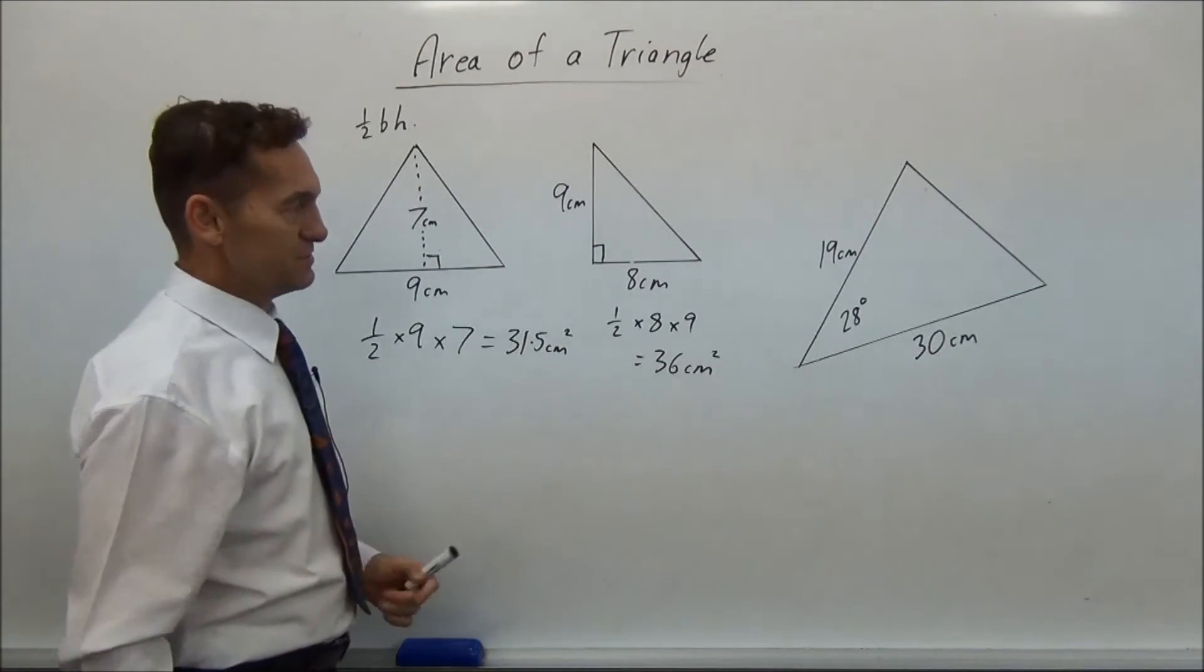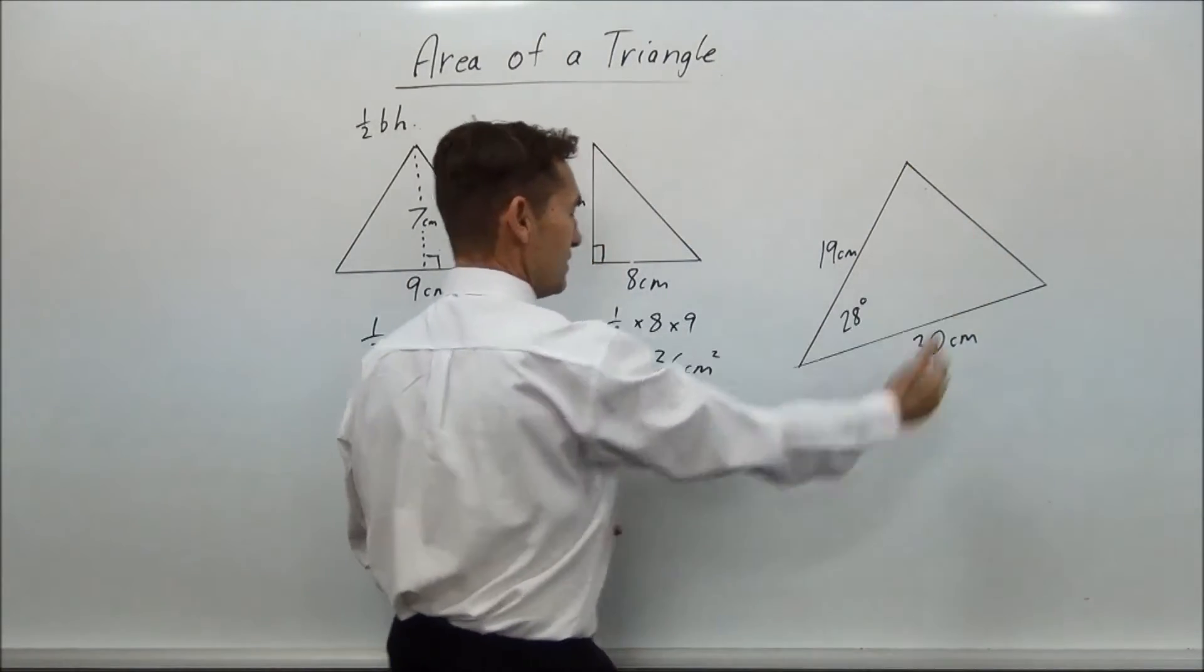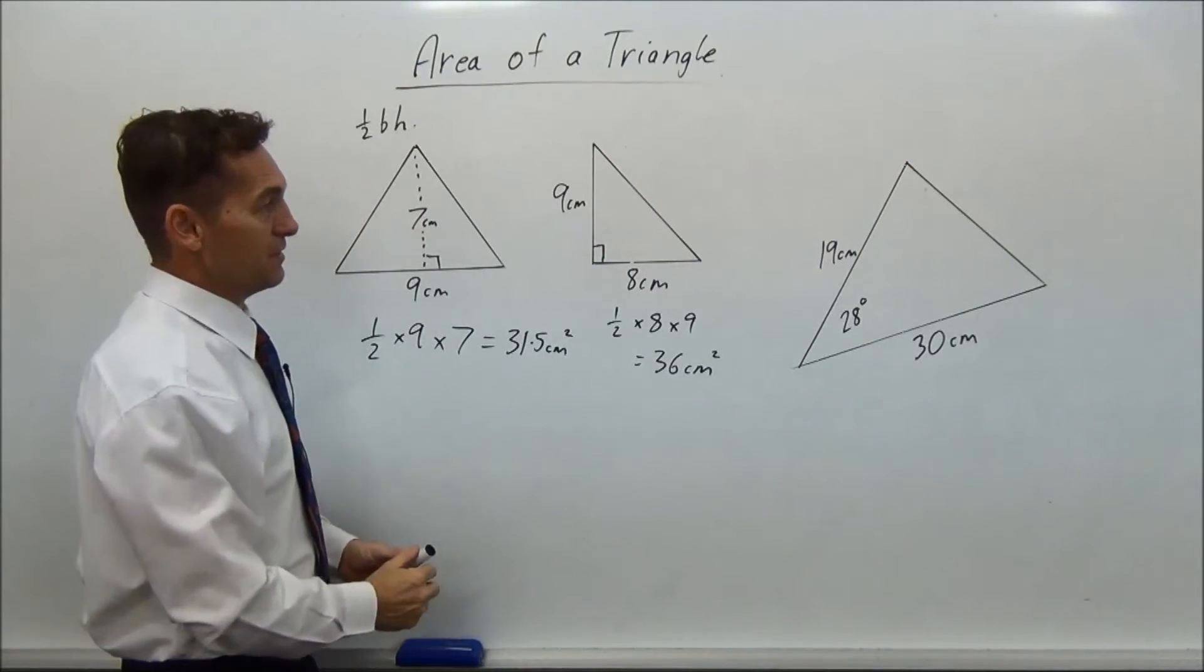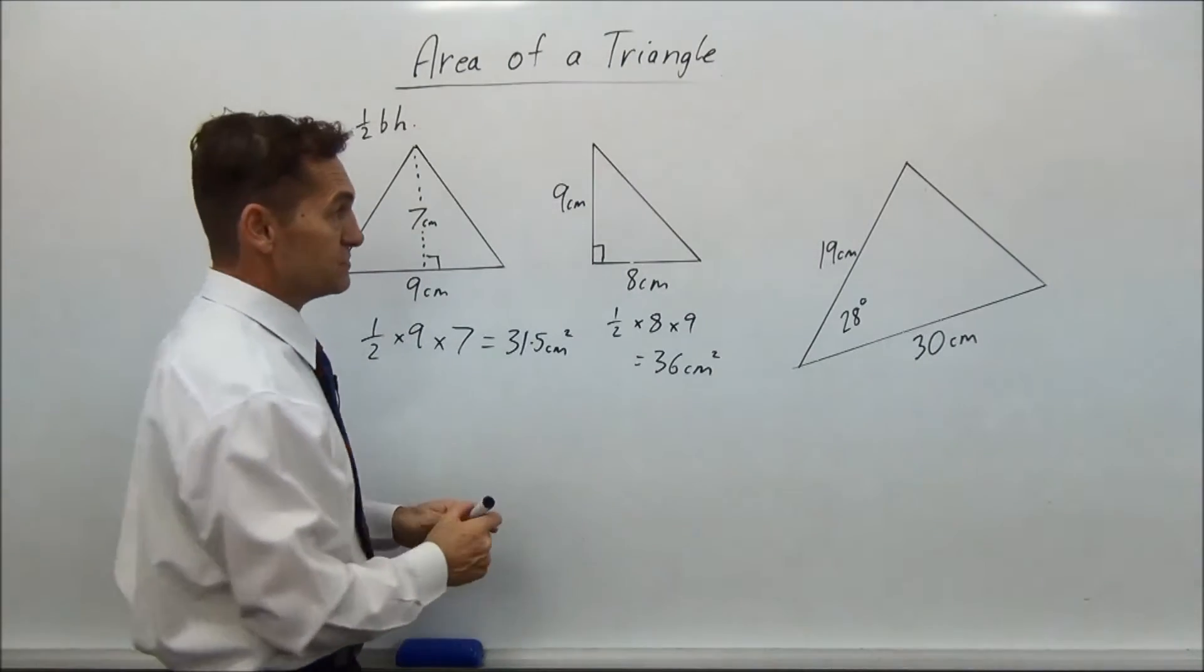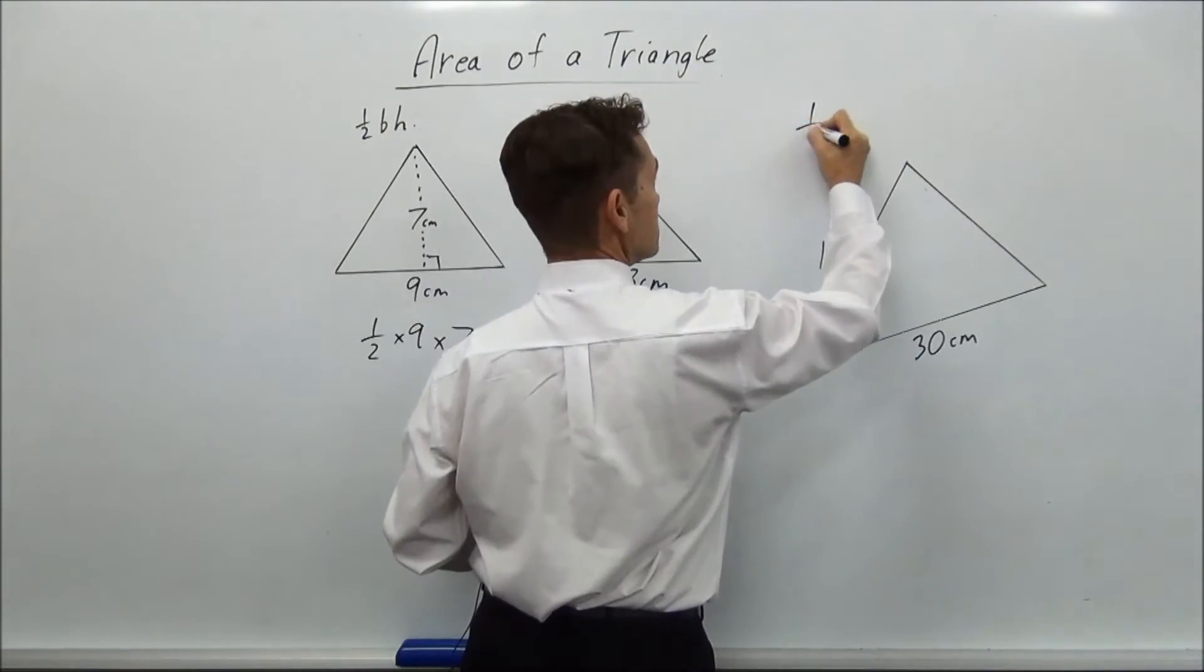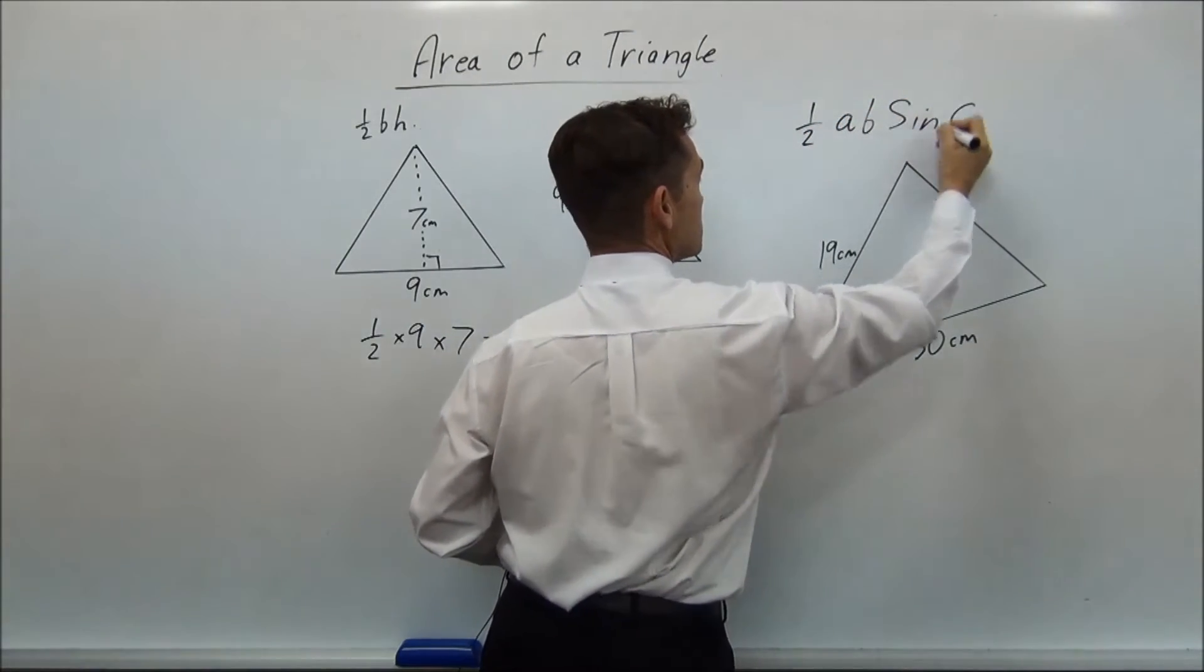What happens when you get a triangle like this, and you go, oh my goodness, there's no right angle, they haven't given me the height. What the heck do I do? Well, pretty simple. You're given a formula sheet, and it's actually got area of triangle on it, and it says half AB sine C.